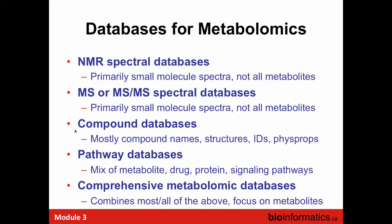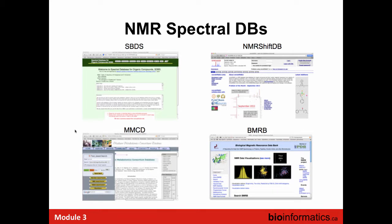The result is that there are many types of databases in metabolomics. There are spectral databases — NMR spectral databases, MS/MS and EIMS databases. There are compound databases, some of which we've already discussed. Then there are pathway databases, which connect chemicals to genes, proteins, and physiology. And finally, comprehensive metabolomic databases, which try to combine spectral databases with pathway databases, compound databases, and encyclopedic information.